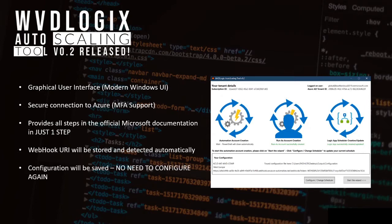Additionally, a configuration will be saved, so you don't need to reconfigure the tool over and over again. For example, if you just need to change the scheduler, you can do this directly from within the tool. So there's no need to do the complete configuration steps again or log into the Azure portal to change the scheduling. The overall installation and first configuration last 15 minutes maximum.